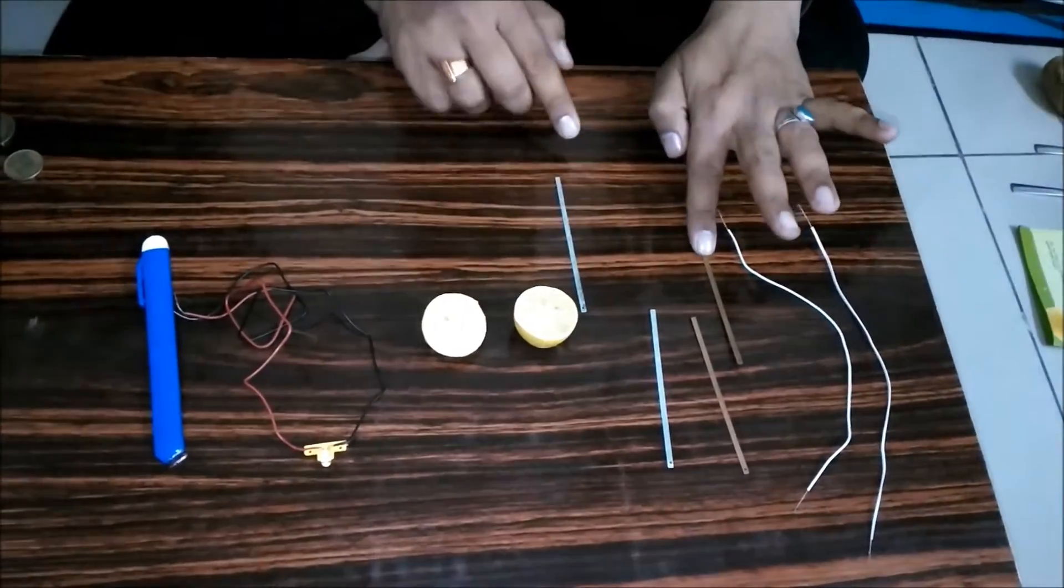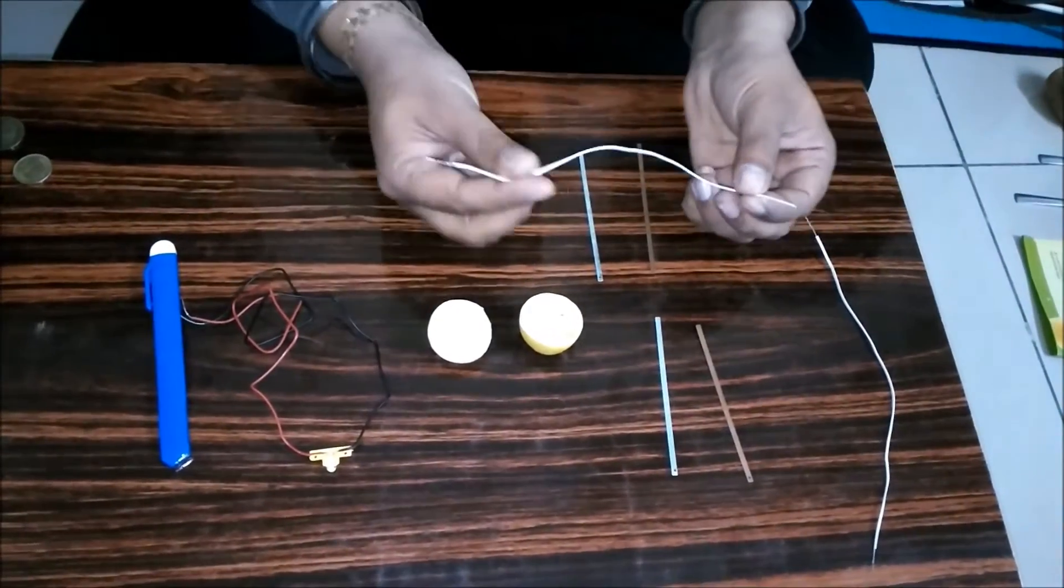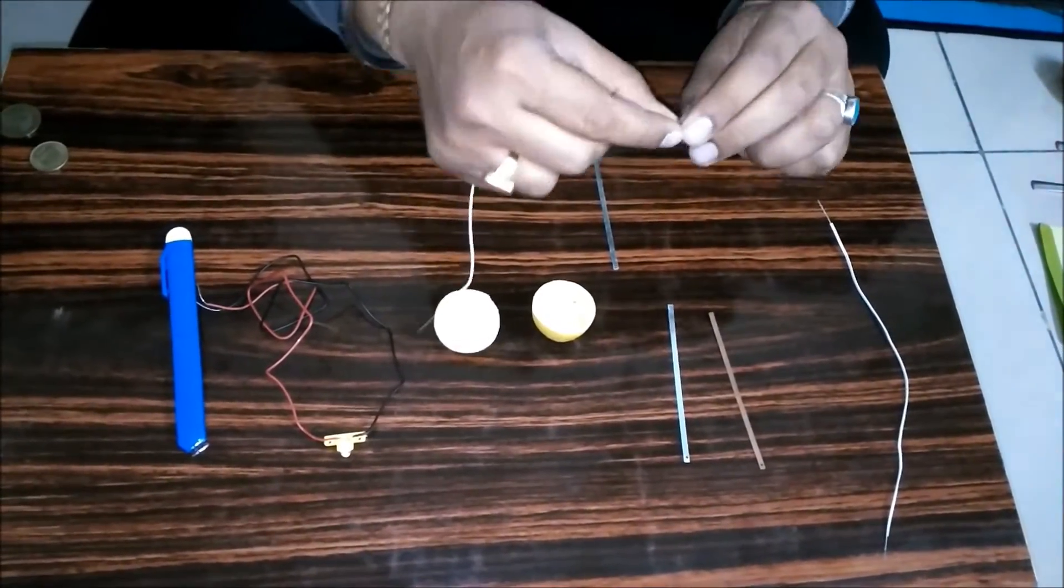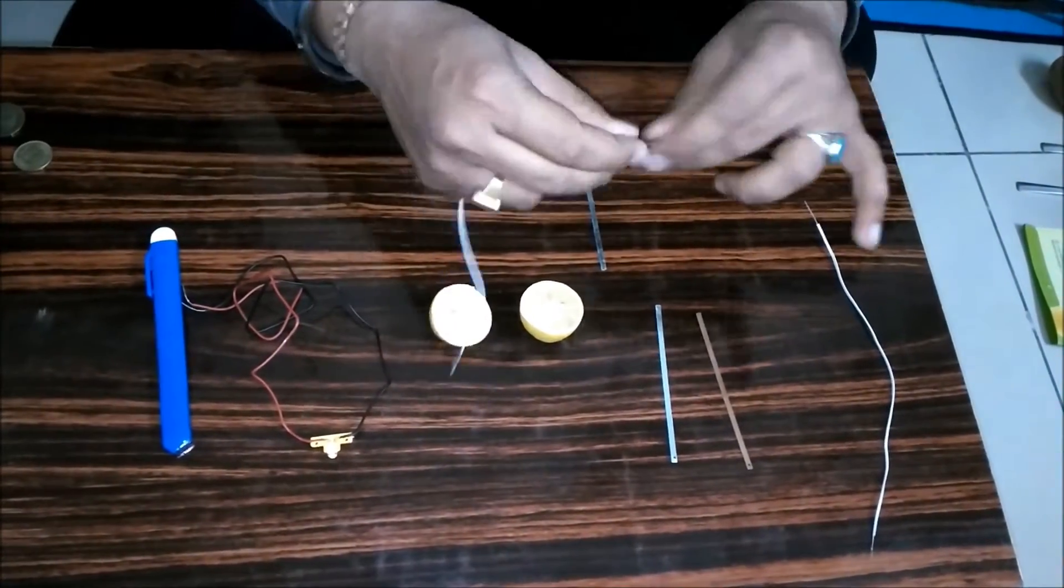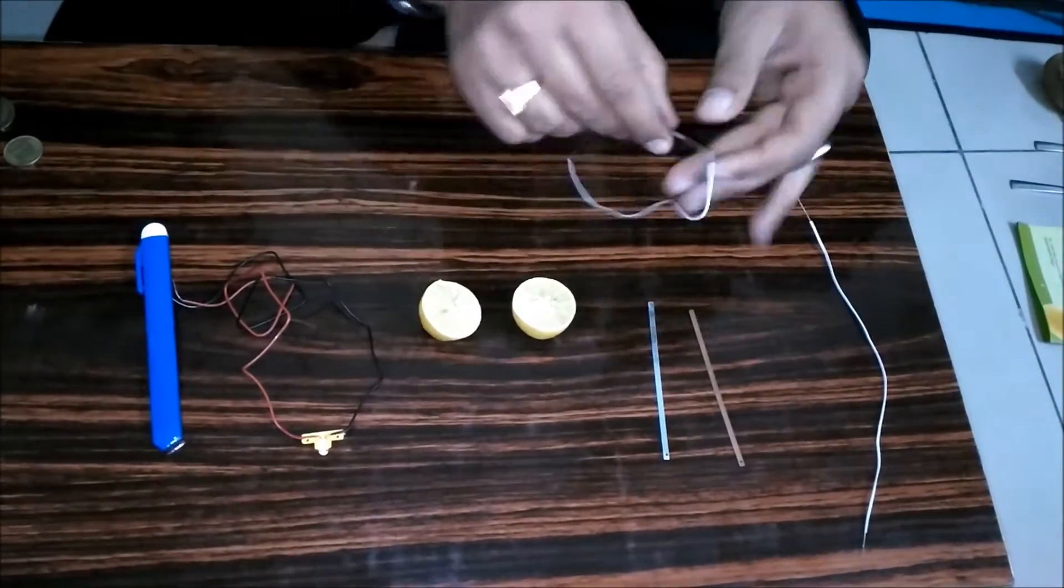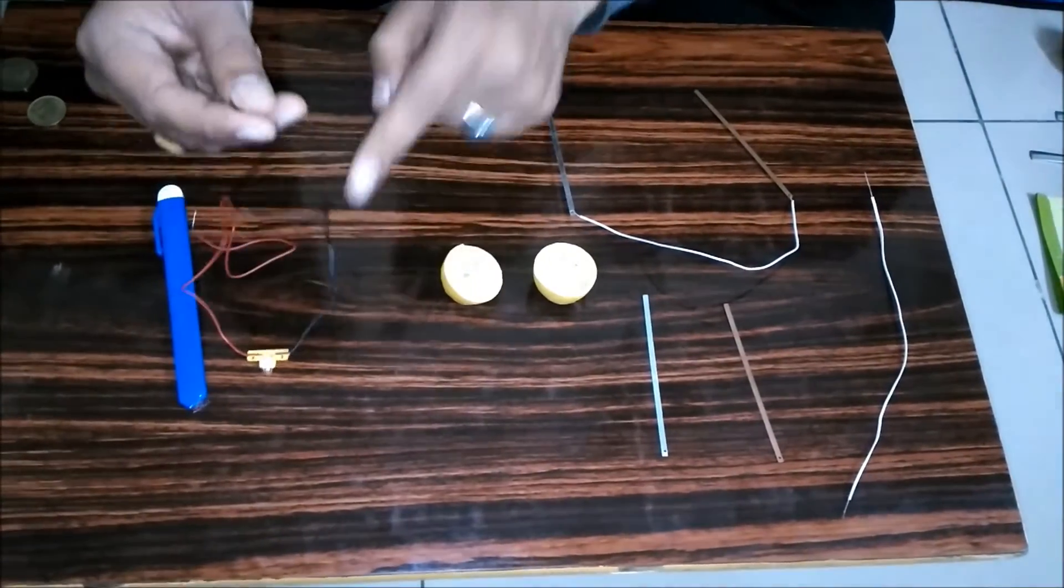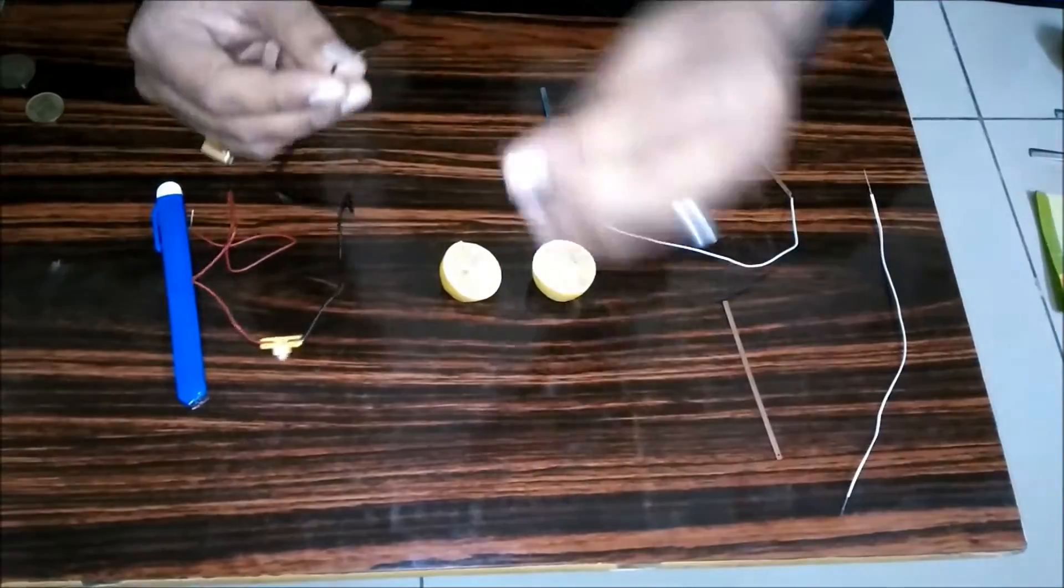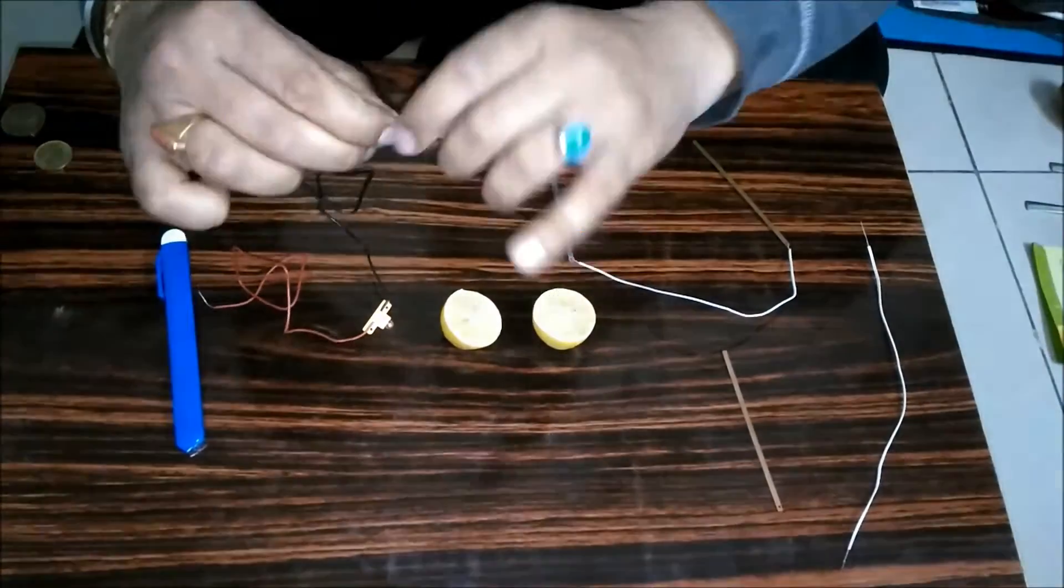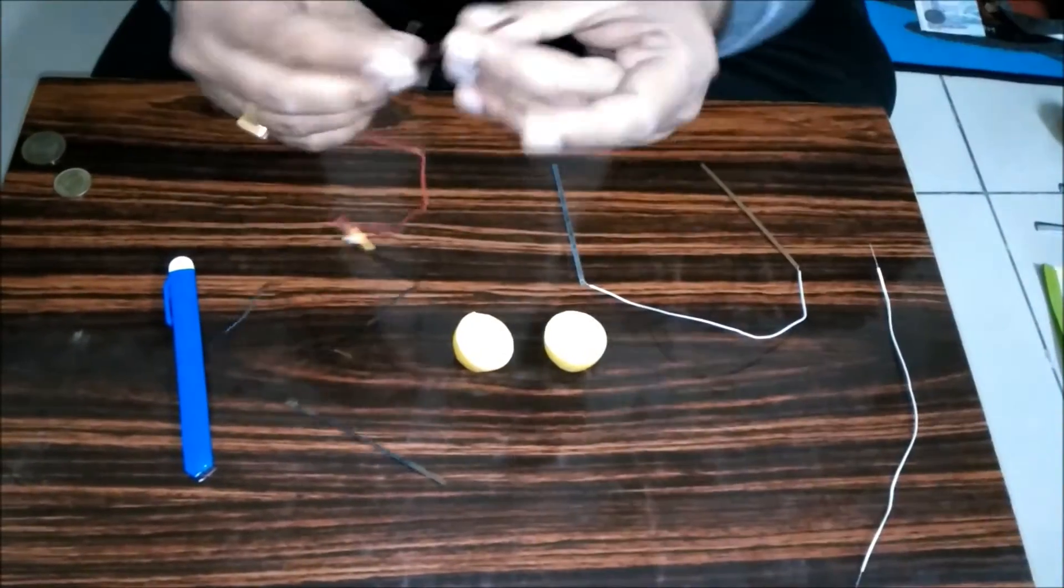Now we take one strip of copper, one strip of zinc, and we'll connect these two strips with a wire. Now the connection looks like this. Now the two ends of LED light will connect with one zinc strip and one copper strip.